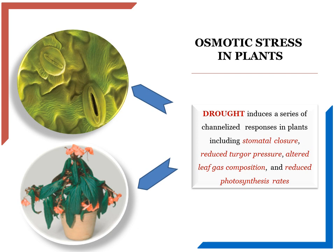A series of events occurs in response to drought, which include closure of stomata and reduced turgor pressure. This will eventually alter the leaf gas composition because stomata are the points from where gases are exchanged. Closure of stomata ultimately leads to reduced photosynthesis rates. In the effort to reduce transpiration, photosynthesis also gets reduced, and due to loss of water beyond their management capacity, wilting — temporary or permanent — may occur.